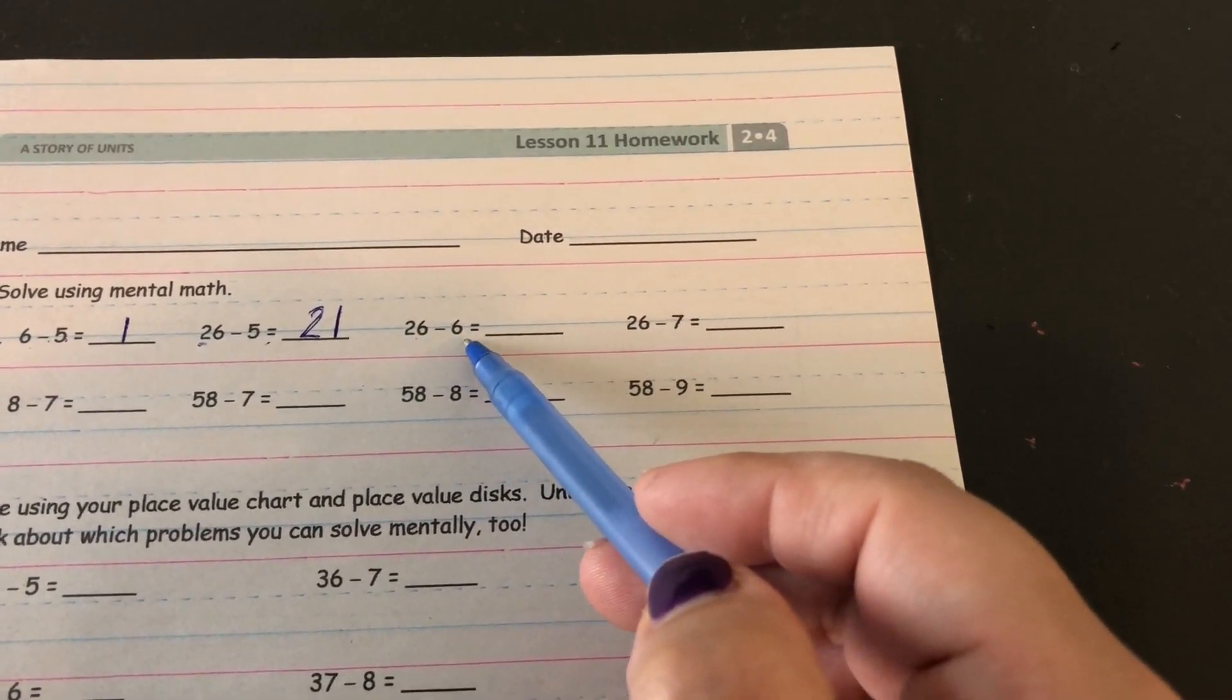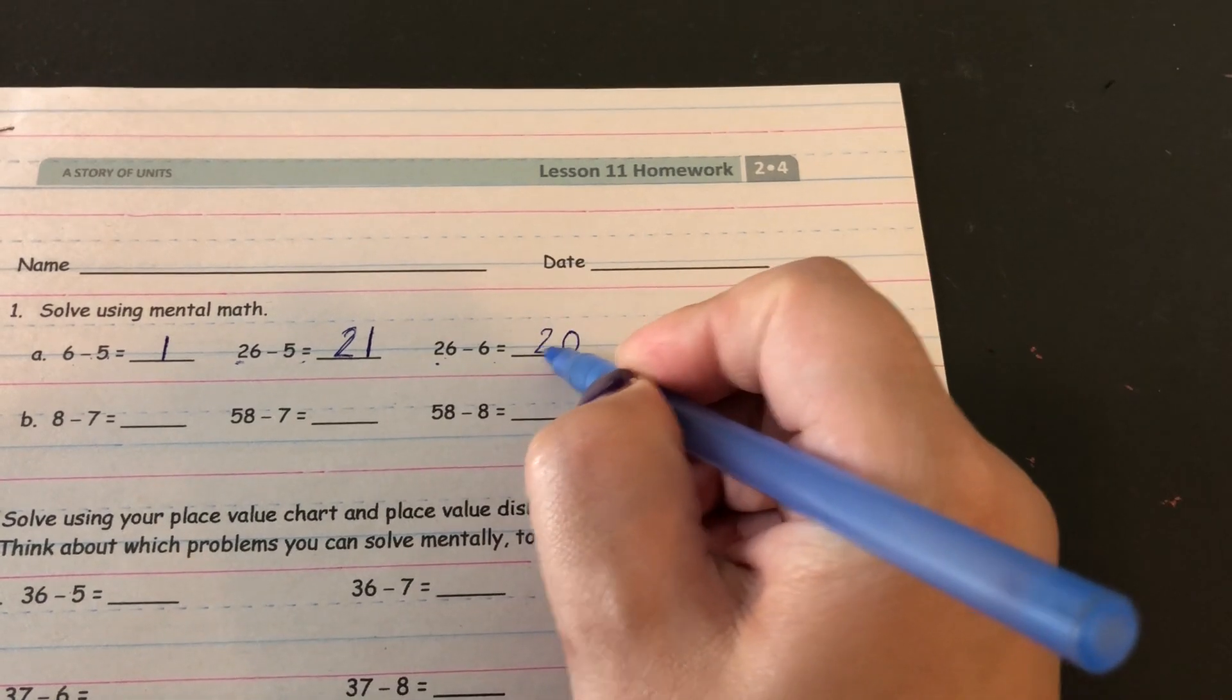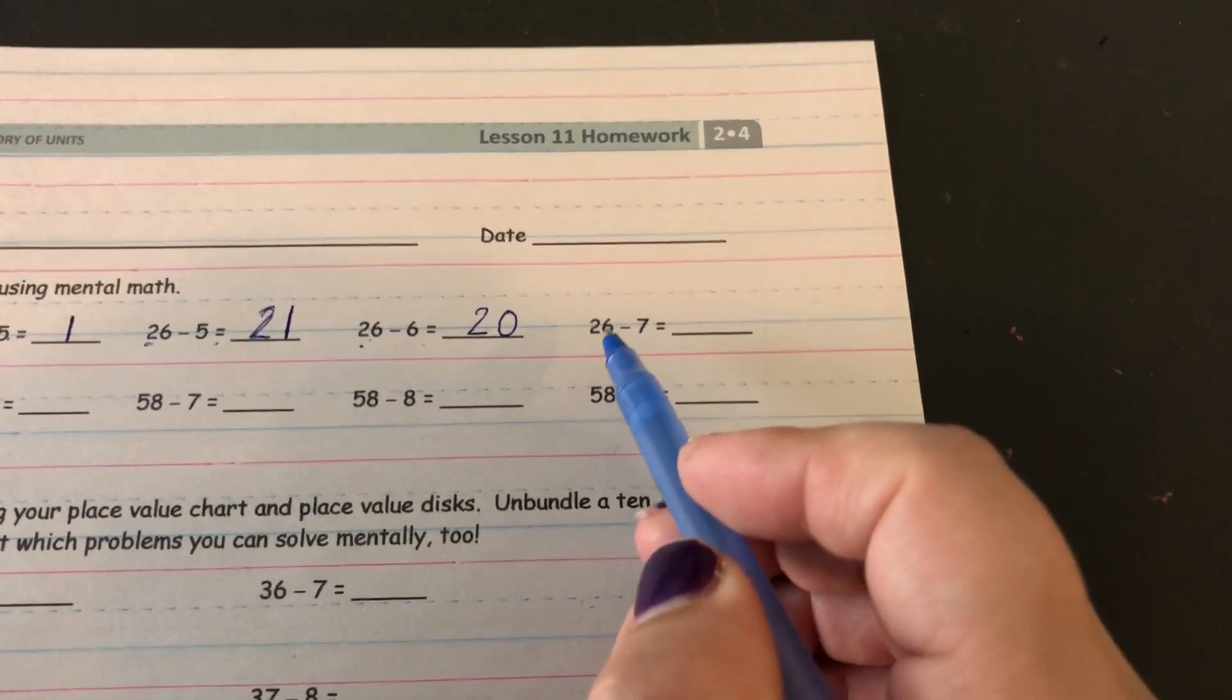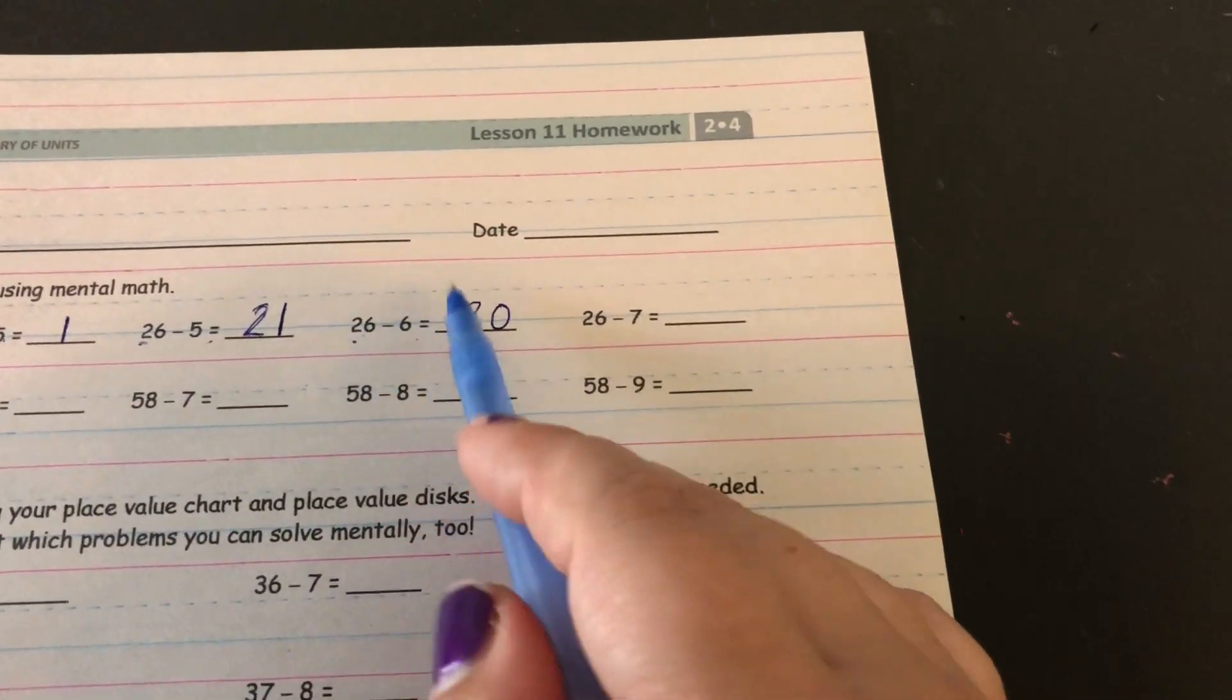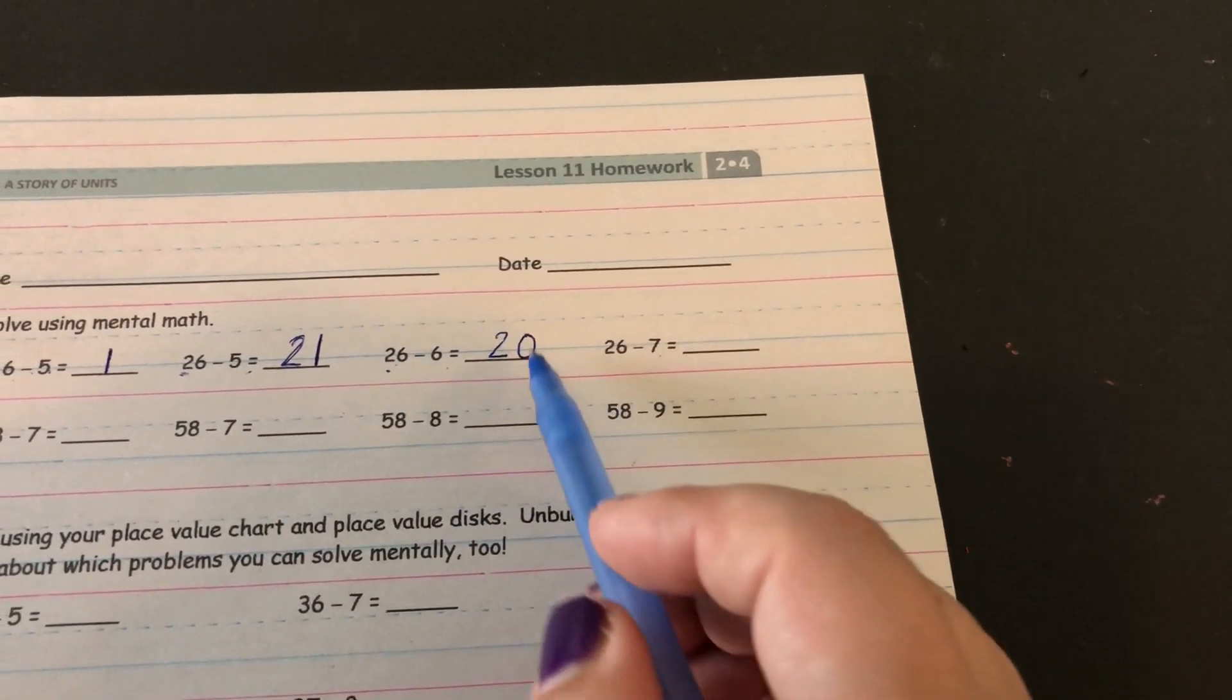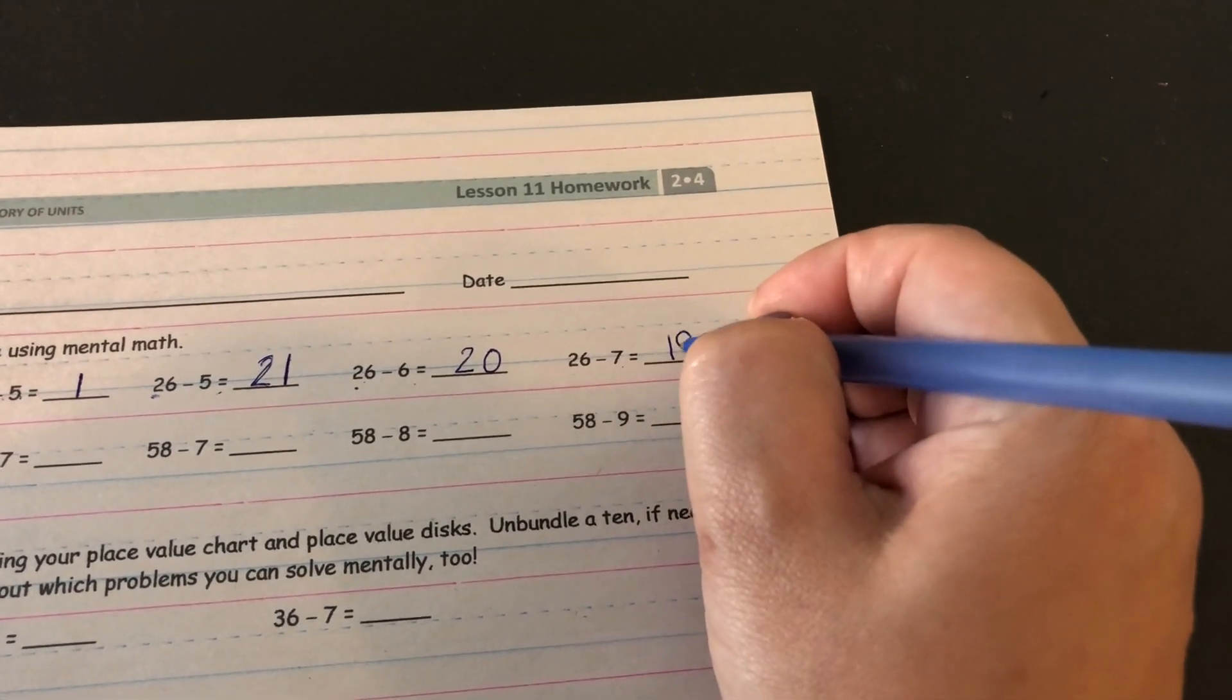Now we're doing 26 minus 6. Also something we can do in our head. 6 ones take away 6 ones is 0 ones and you put those two tens back in. And the last one is 26 minus 7. At first you might think I can't do this one in my head because if I have 6 ones and I take away seven of them I won't be able to. But if you go back to this one, you know that 26 minus 6 was 20. Well if I'm doing 26 minus 7, I'm just taking one more away. So this answer here would need to be one less than this answer. So my answer is 19.